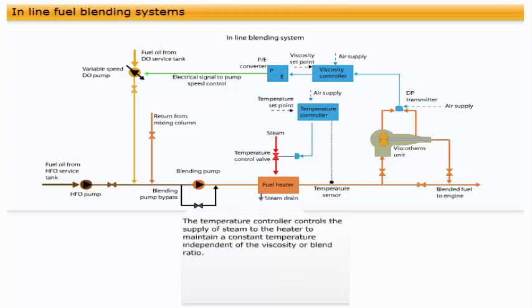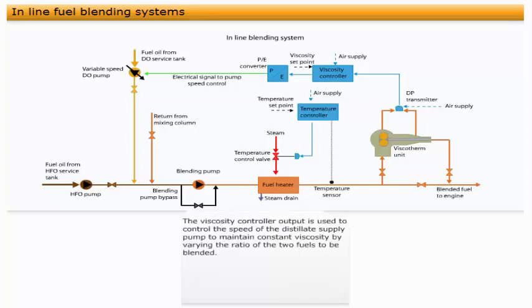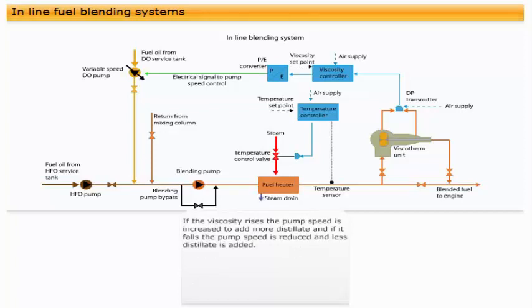The temperature controller controls the supply of steam to the heater to maintain a constant temperature independent of the viscosity or blend ratio. The viscosity controller output is used to control the speed of the distillate supply pump to maintain constant viscosity by varying the ratio of the two fuels to be blended.